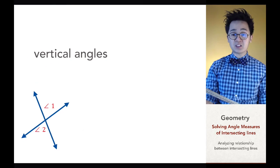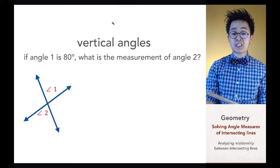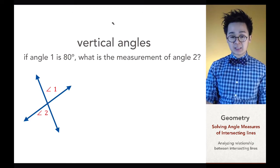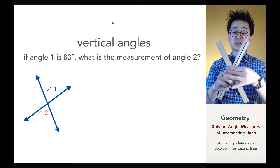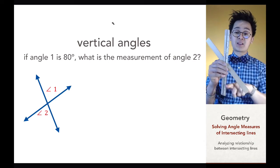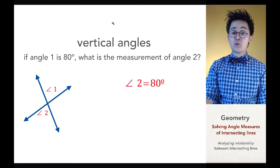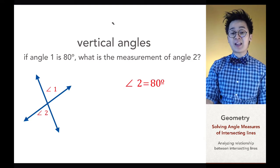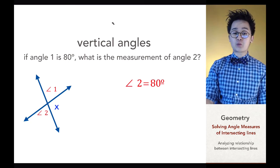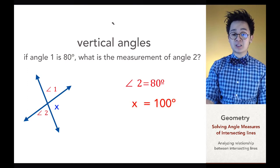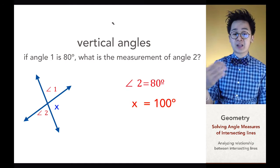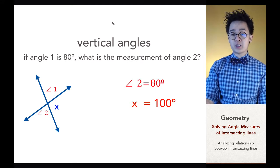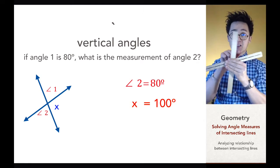Applying the vertical angles concept: if angle one is 80 degrees and we need to find angle two, since vertical angles are congruent, angle two is also 80 degrees. For the adjacent angle x, it forms a straight line with angle two, so x equals 180 minus 80, which is 100 degrees. This is how we use the relationship between angles with vertical angles.